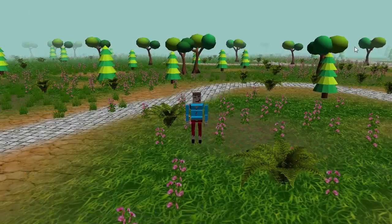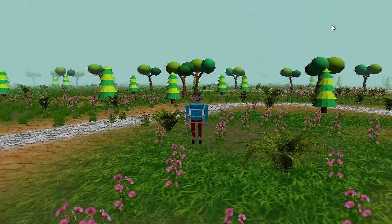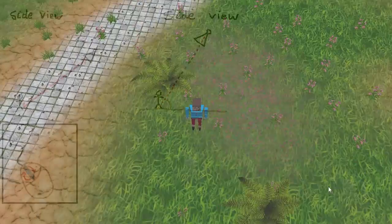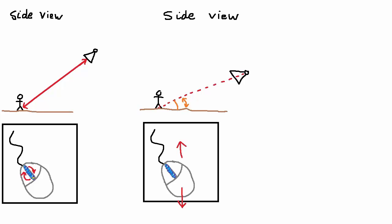Also, the user can control how high or low the camera is. If we look at what's going on from the side, we're basically just altering this angle here, which moves the camera up and down. I'm going to allow this angle to be controlled by moving the mouse up and down while the right mouse button is pressed.